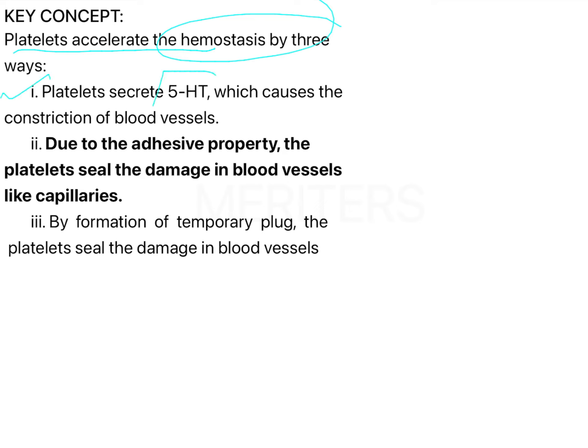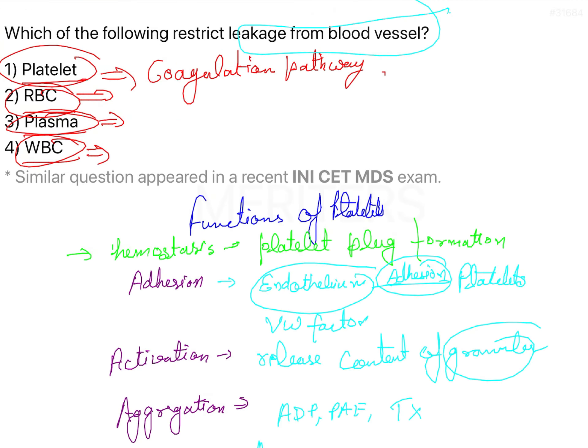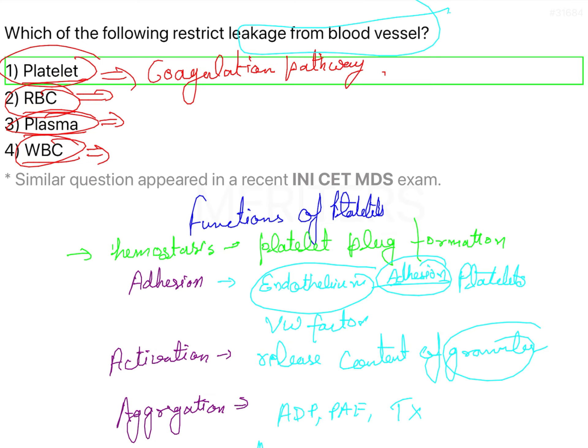Platelets secrete 5-HT which causes vasoconstriction, and they have adhesive properties to seal damage in blood vessels like capillaries. By formation of a temporary platelet plug, the platelets seal the damage in the blood vessels. So the correct answer is option 1, that is platelet.